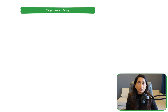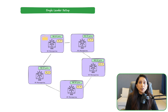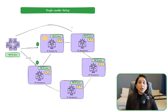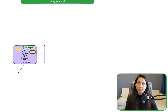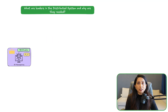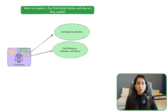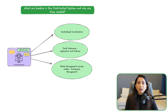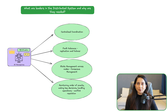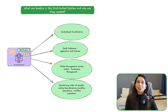To understand what a leader is, we will take the example of a single leader setup from our previous videos — a key-value store where there are certain nodes and only one node acts as leader. In distributed systems, a leader is typically defined as a node or process responsible for coordinating certain tasks and managing state across different nodes to ensure consistency, availability, and reliability. The leader is the central authority for making key decisions, coordinating operations, and managing the order of events across the distributed network.